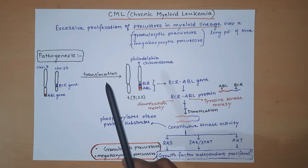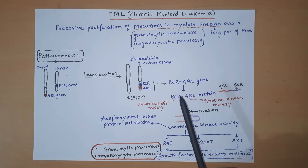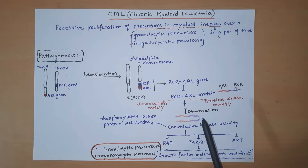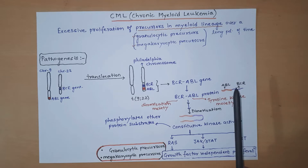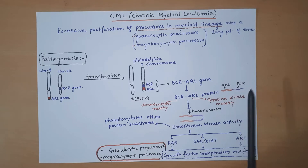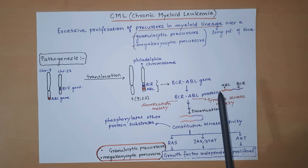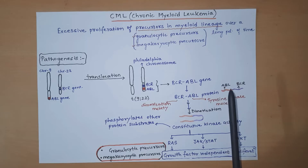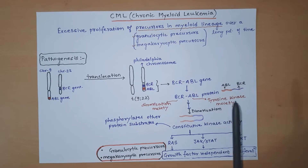The Philadelphia chromosome is formed after translocation between chromosome 9 and chromosome 22. The BCR-ABL gene encodes the BCR-ABL protein, which has two parts: the BCR part, which is the dimerization moiety with a tendency for self-dimerization, and the ABL part, which has the ability to perform constitutive tyrosine kinase activity.